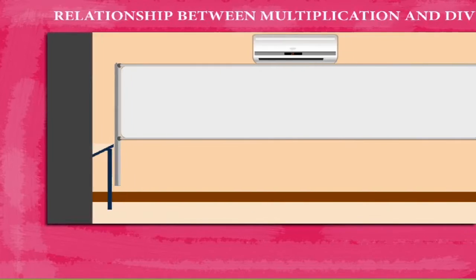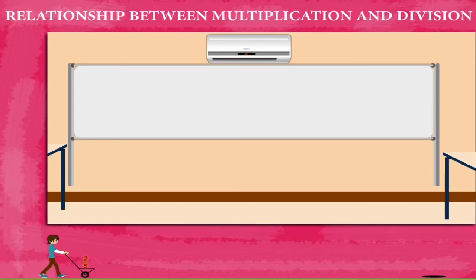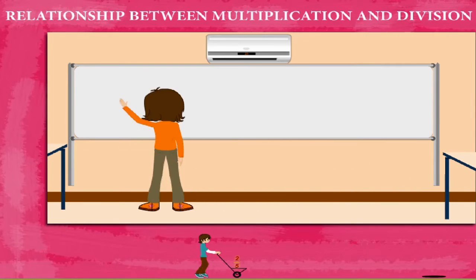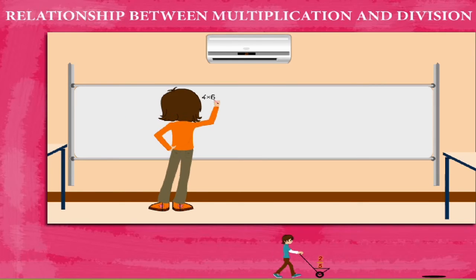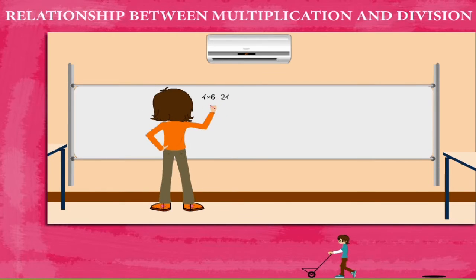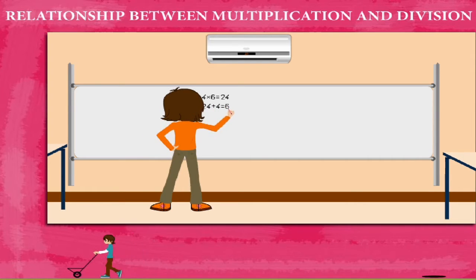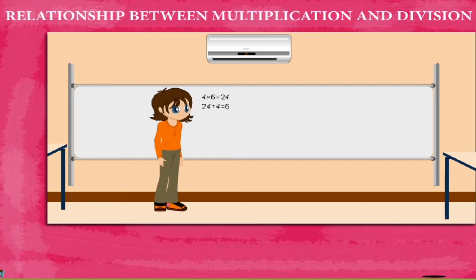Relationship between multiplication and division. Hazel walks on to the board. She writes 4 into 6 is equal to 24. Now she writes 24 divided by 4 is equal to 6. Remember, multiplication and division are the opposite of each other.